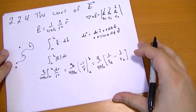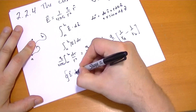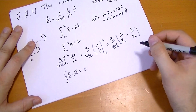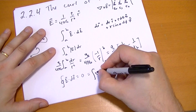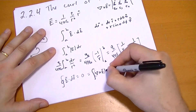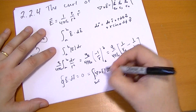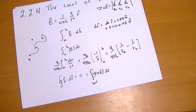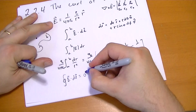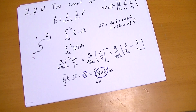Applying Stokes' theorem: the closed loop integral of E-vector dot DL for this single point charge is always equal to zero. According to Stokes' theorem, that equals the surface integral of the curl of E dot dA over any surface bounded by that loop. The only way this can be true for any surface is that the curl of the electric field is always zero.